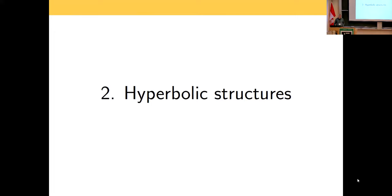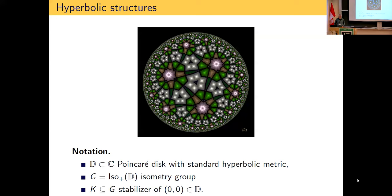First I should explain what I mean by hyperbolic structure. Our model is the Poincaré disk with the standard hyperbolic metric. We denote by G its group of orientation-preserving isometries, and by K the stabilizer of any point — for convenience we choose the center — which is isomorphic to U(1).